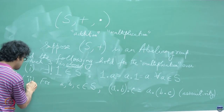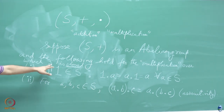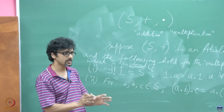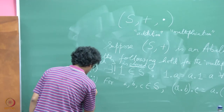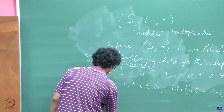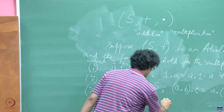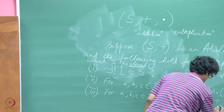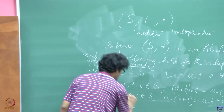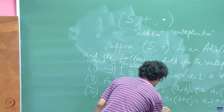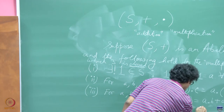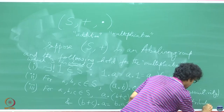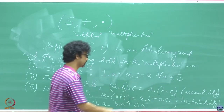Anything else worth adding? Distributivity. These first two properties pertain exclusively to the multiplication operation. But when you have two operations, how they combine with one another is described by distributivity. For A, B, C in S: A·(B+C) = A·B + A·C, and (B+C)·A = B·A + C·A. Together these give you distributivity of multiplication over addition.